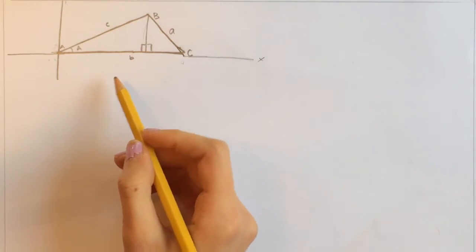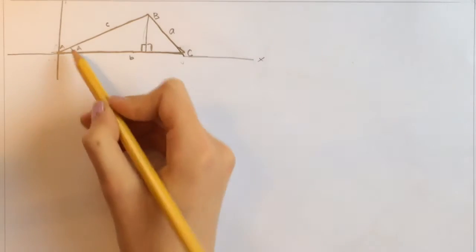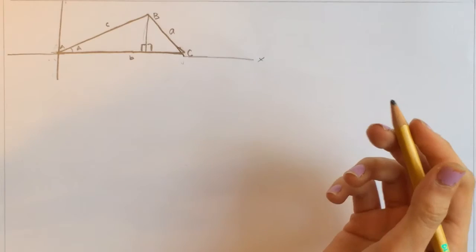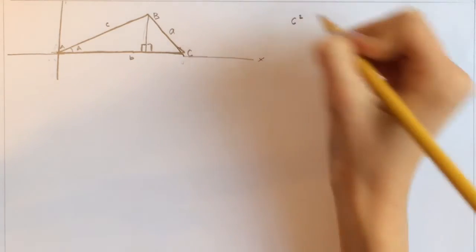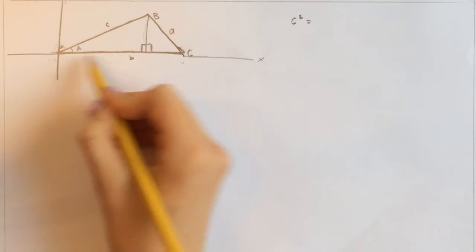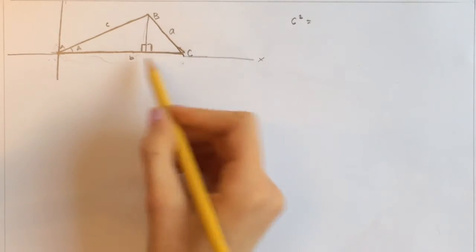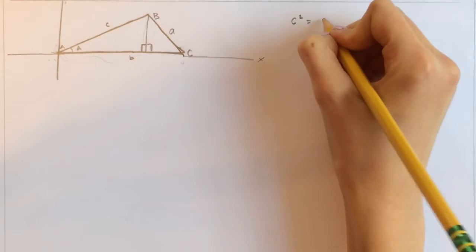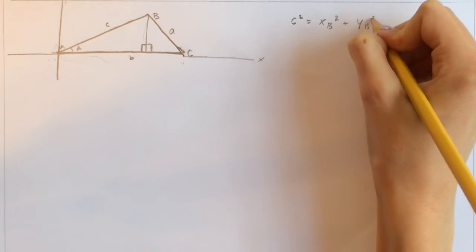So we're going to start looking at the first triangle. Using what we know about the Pythagorean theorem, we know that c squared equals x of B squared plus y of B squared, where x of B is the x-coordinate of point B and y of B is the y-coordinate.